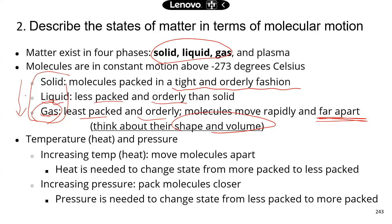That brings us to the next point about the factors that can affect the transition between different states of matter. There are two key factors: the first is heat, also temperature — when you're at a higher temperature, there's more heat available. The second is pressure. When there's more heat available, that heat can allow molecules to overcome intermolecular attraction.